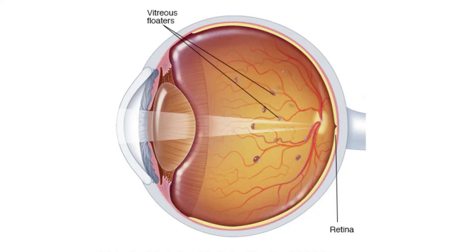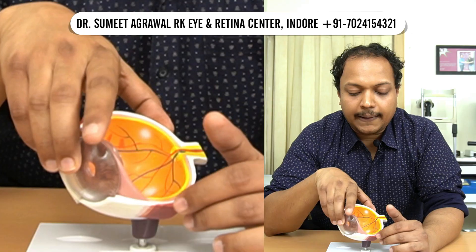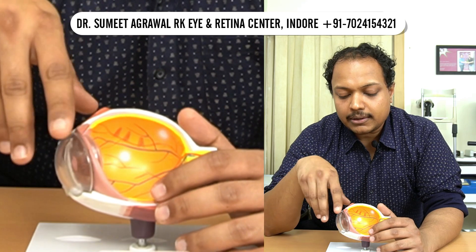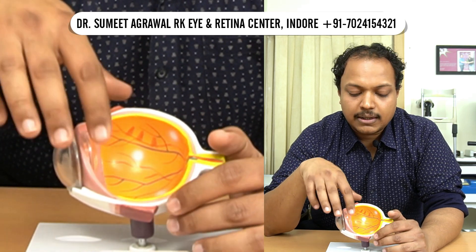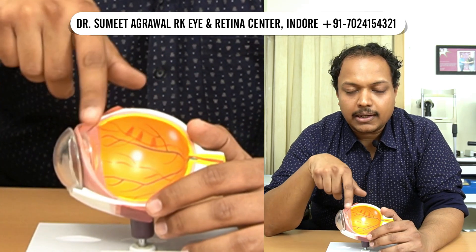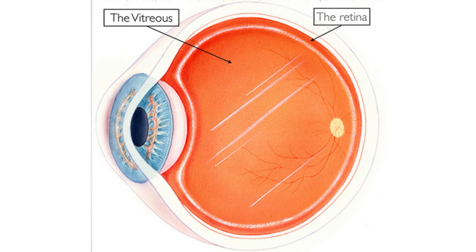Eye floaters are basically shadows which we see of the protein clumps formed inside the eye. To understand this, let's see the structure of the eye. The eye comprises, from front to back, the cornea, the iris, the lens, and at the backmost part, the retina. Between the lens and the retina there is a gel which we call the vitreous gel. This gel is made out of protein, collagen, and water.